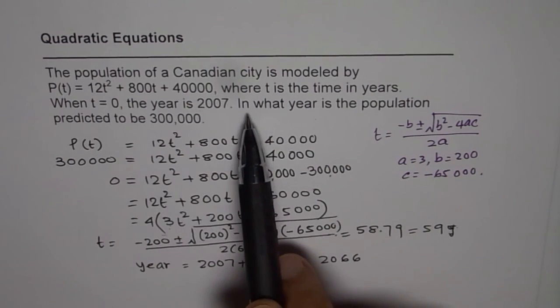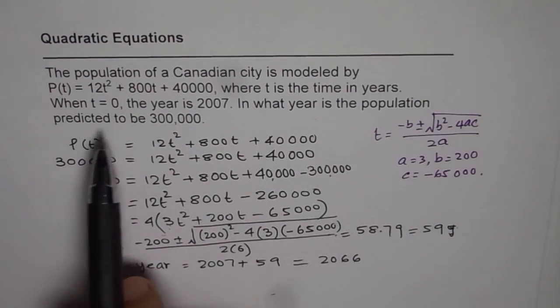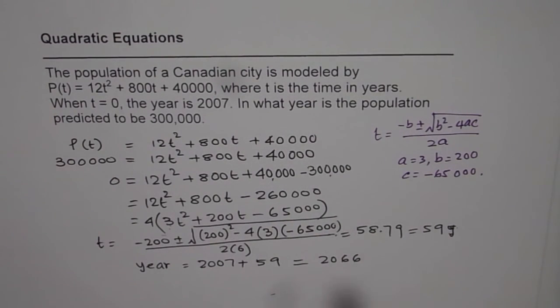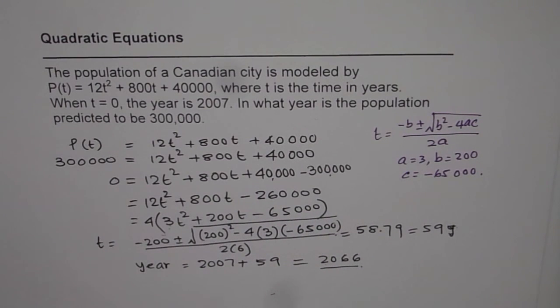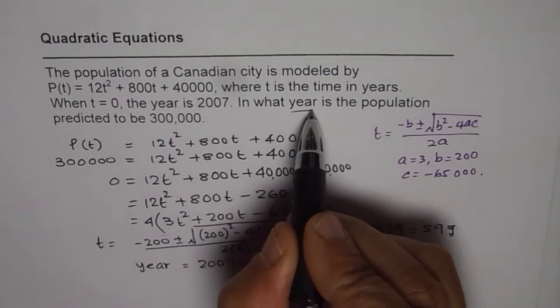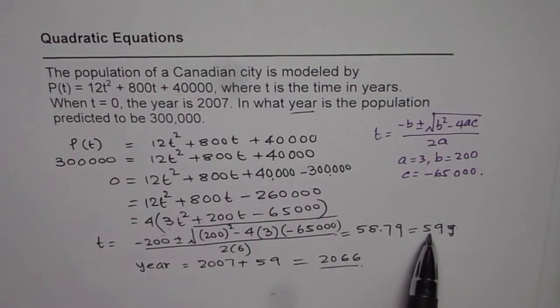So in the year 2066, it says in what year is the population predicted to be 300,000? We can say, definitely in the year 2066, it will be 300,000, a bit more than that. So that is our answer and this is how you need to do it. Remember, the time is time from 2007 and the question is you need to write the year. So don't forget to add your answer to the year 2007. So that could be a mistake. Take care. Thank you and all the best.